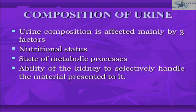In this section of the presentation, we will be studying about the composition of urine. The urine composition is affected mainly by 3 factors. First is nutritional status of the body. Second is the state of metabolic process that occurs in the body. And third is the ability of the kidney to selectively handle the material presented to it. These are the 3 factors that affect urine composition.